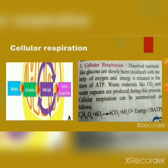We also learned about internal respiration — the exchange of gases between the cells and tissue fluid. And cellular respiration, where dissolved nutrients like glucose are slowly oxidized with the help of oxygen, energy is released in the form of ATP, and waste materials like carbon dioxide and water vapor are produced during this process.